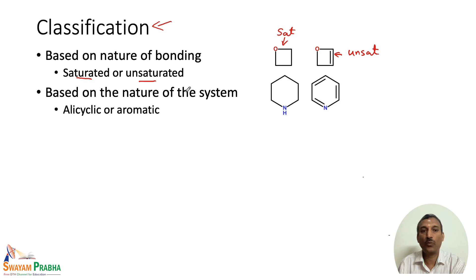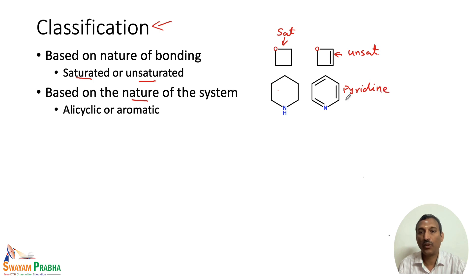We can also classify them based on whether it is an alicyclic or aromatic compound. For example, piperidine is an alicyclic ring, while pyridine is an aromatic ring. So heterocyclic compounds can be classified as alicyclic or aromatic.